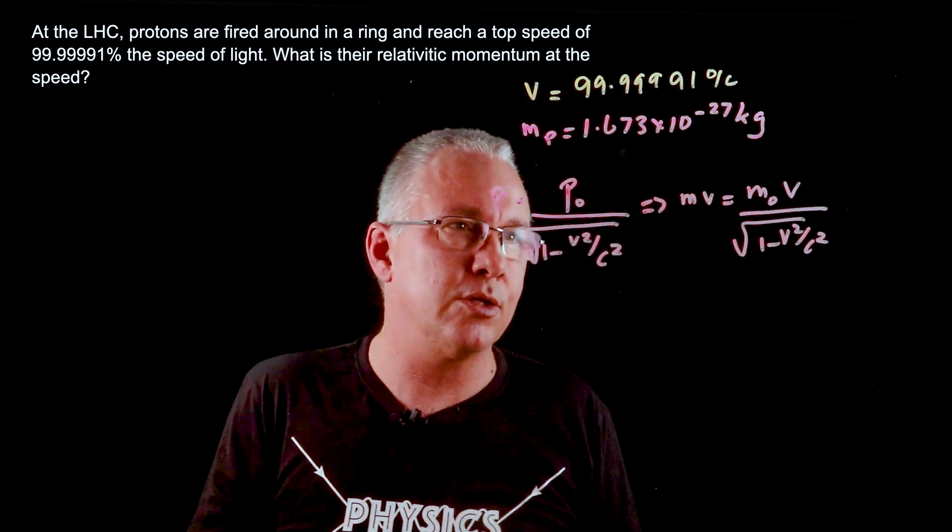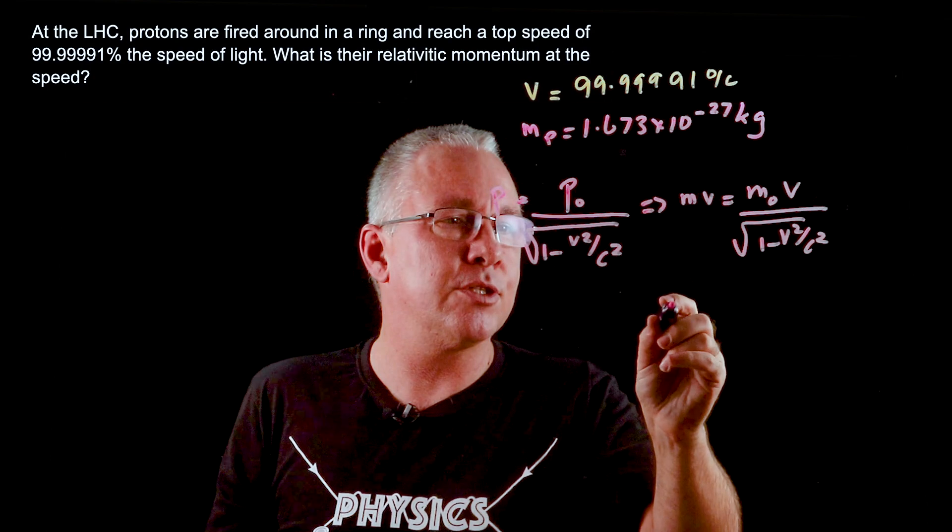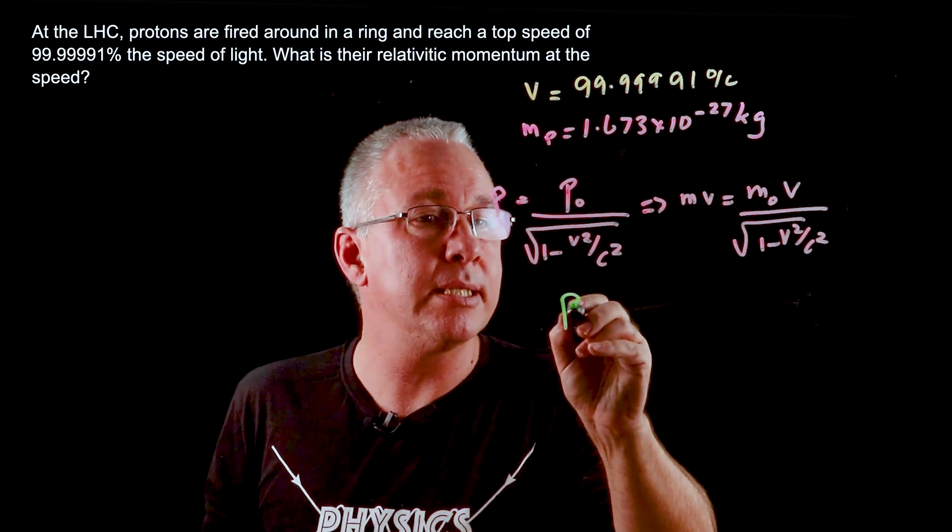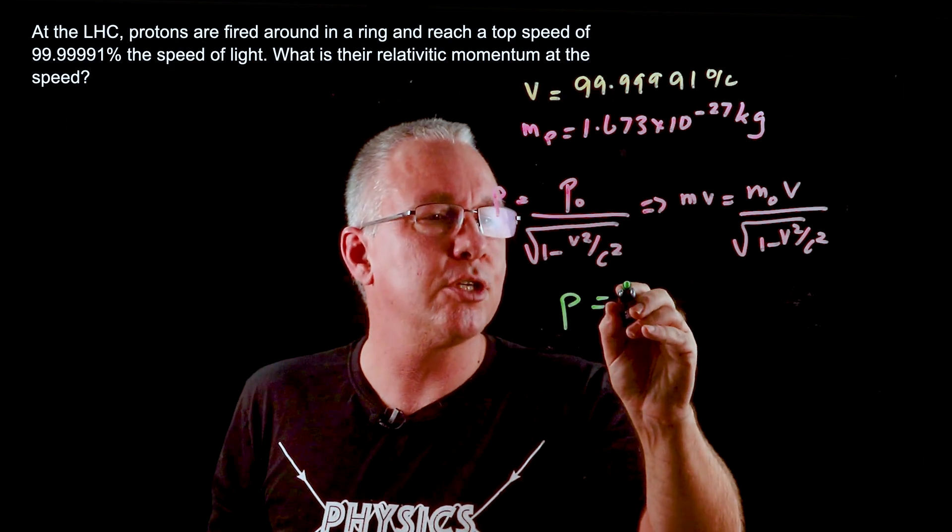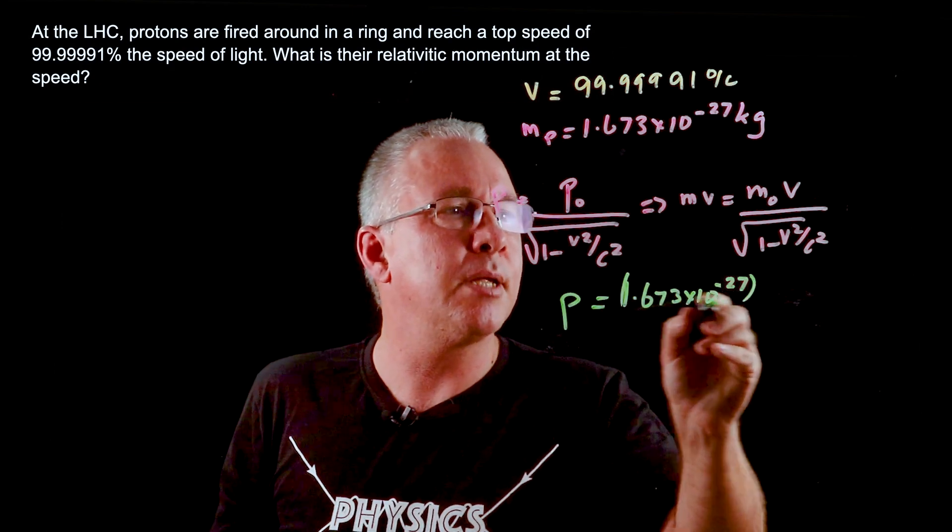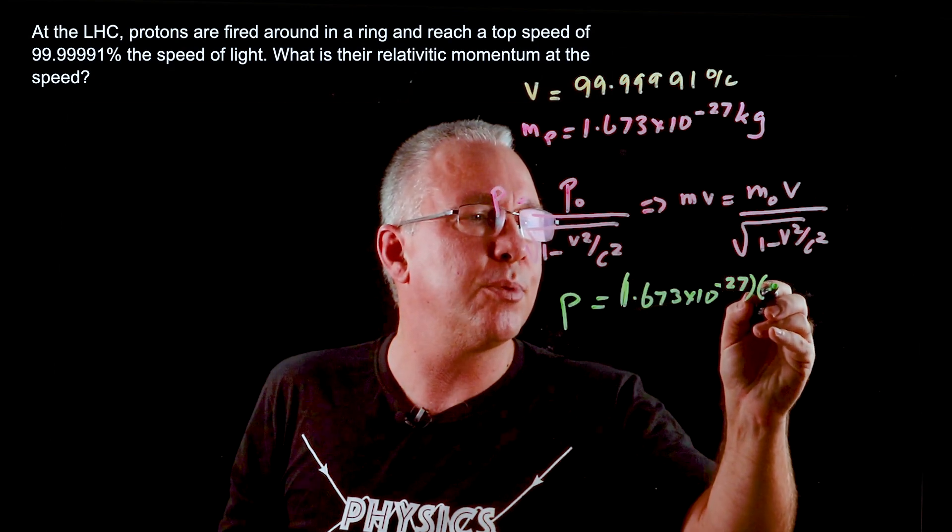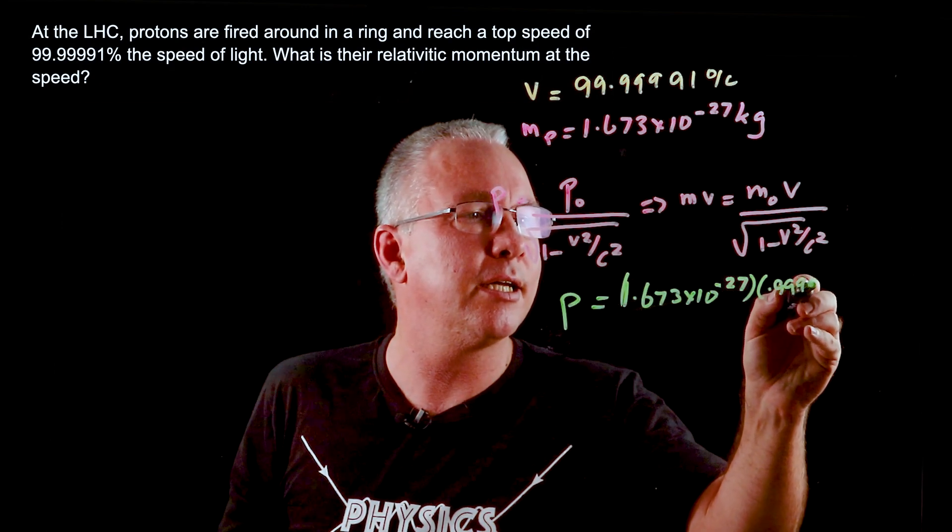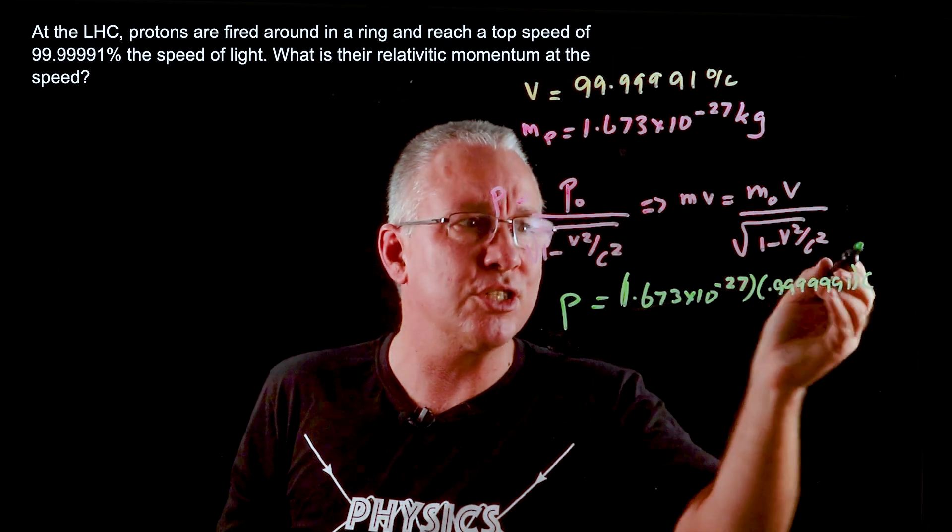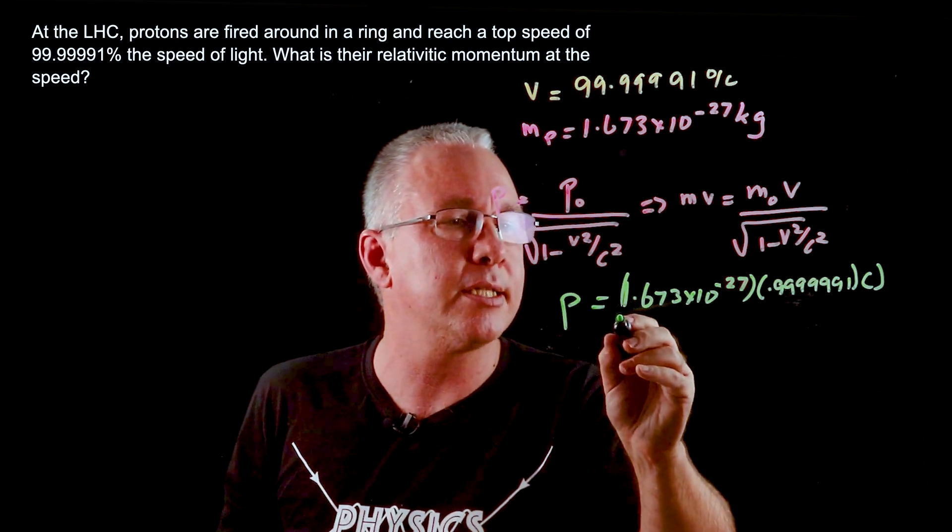And of course we're interested in this total value. So as a result we can now substitute things in. So to work out our momentum is equal to the mass of my proton which is 1.673 by 10 to the power of negative 27 multiplied by the speed which is 0.9999991 multiplied by c. I'm not going to put c here for the moment because you know that's the speed of light.